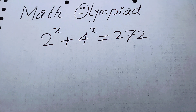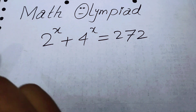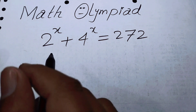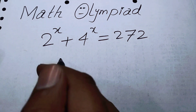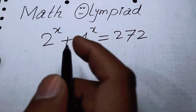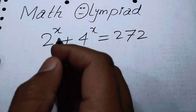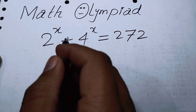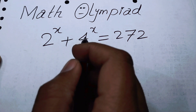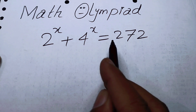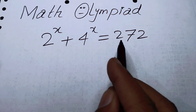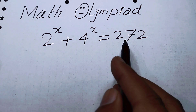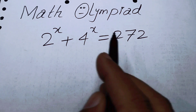Hello everyone, welcome to the Map of Mathematics. In this video we are going to solve this nice exponential problem. The question statement is: 2 to the power of x plus 4 to the power of x is equal to 272, and we will find the value of x.